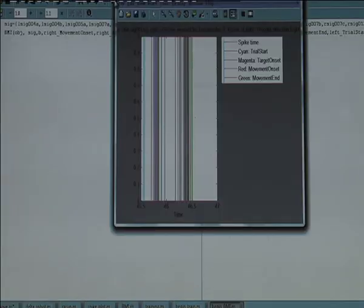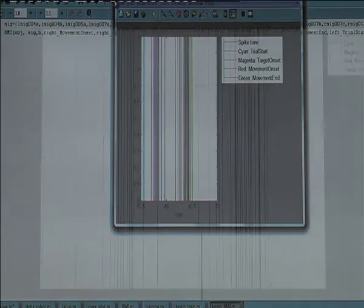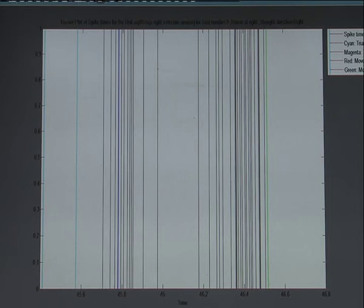At this point, based on the random number chosen earlier, a left or right brain signal is selected and decoded using the population vector algorithm.